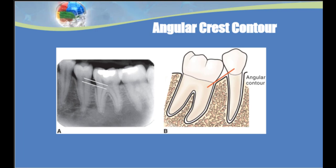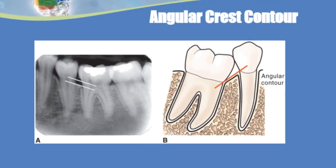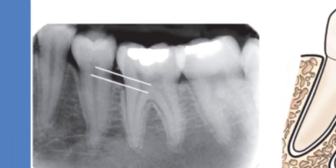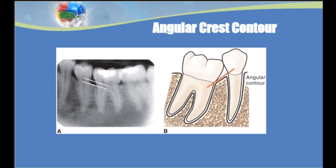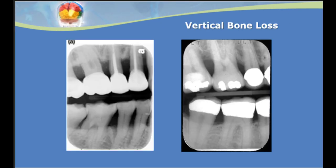The alveolar crest can also be healthy with an angular contour. When we look at an example with an angular contour, we may first assume there is bone loss. But if you draw an imaginary line from the CEJ of number 20 to the CEJ of number 19, we see a natural angle in the alignment of these two teeth and therefore a natural angle in the alveolar crest. The important takeaway is to always draw the imaginary line between the two adjacent CEJs before assessing the alveolar crest.